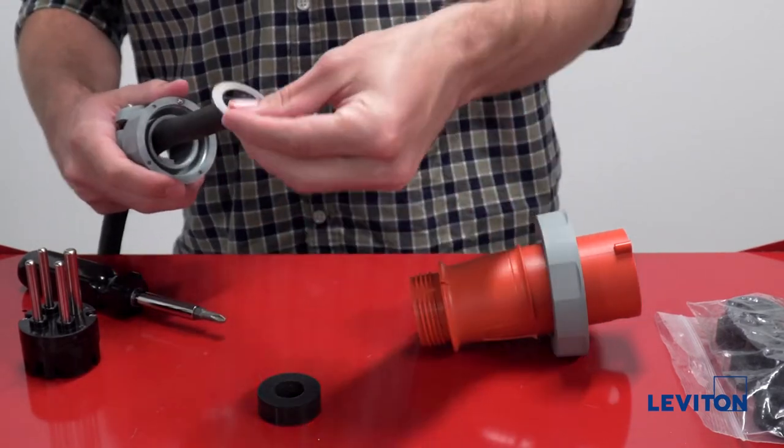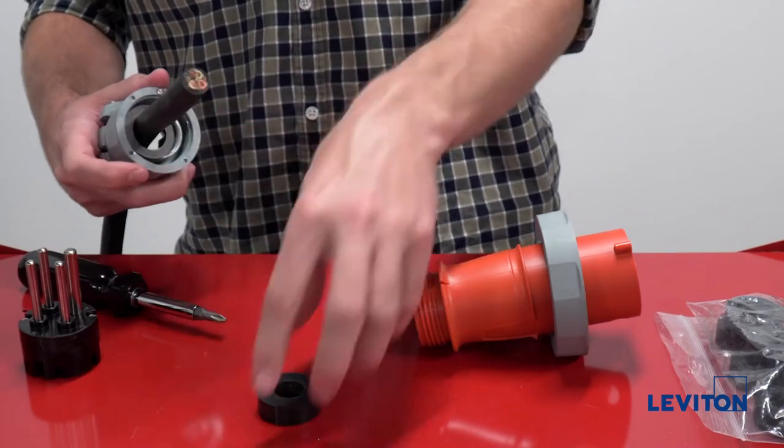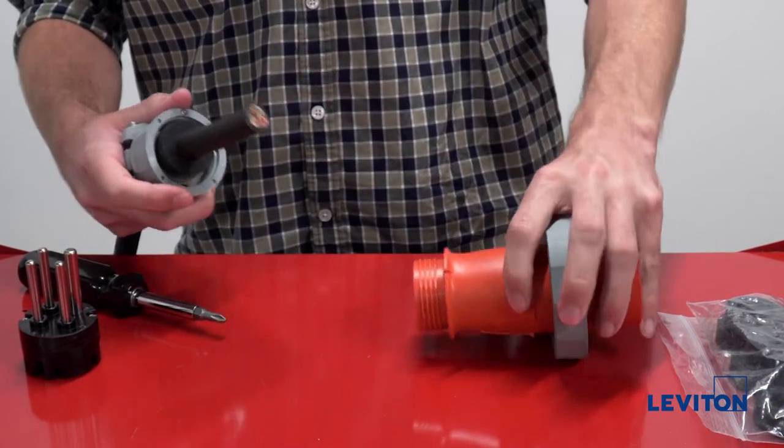In the following order, place the clamp assembly, washer, grommet and housing onto your selected wire.